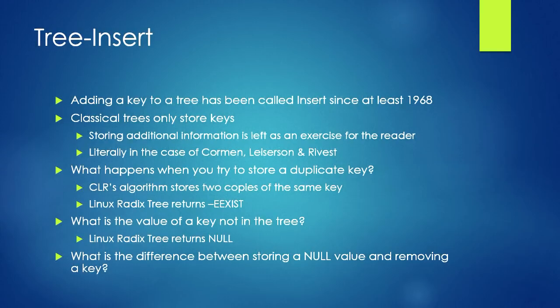I'd encourage you to read these URLs — I'll put the slides up somewhere. Read these two blog entries by Rusty; they're really good and talk about how not to write kernel APIs. This interface doesn't rank way down at the bottom with the 'this interface is actively harmful' kind, but it just doesn't fit how people want to use it. Part of the problem goes all the way back to the literature. The earliest paper I could find on tree data structures was from 1968, and adding something to a tree has always been called 'insert' — not 'store,' not any other synonym.